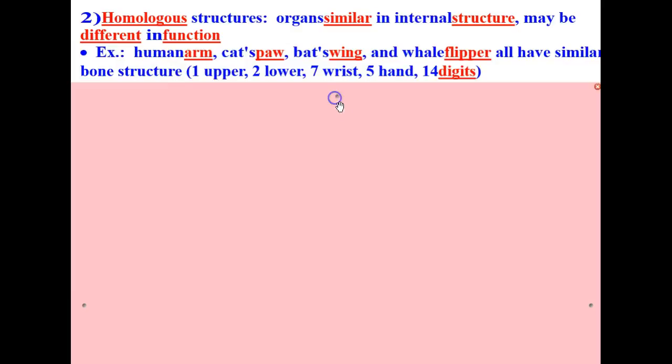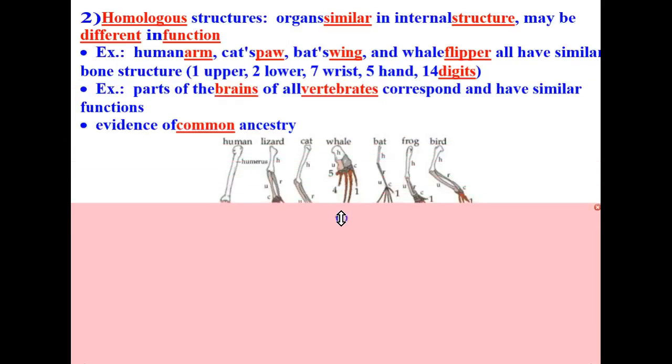For example, the human arm, cat's paw, the bat's wing and the whale flipper all have similar bone structure. They have one upper, two lower, seven wrist, five hand, and 14 digit bones, as shown in these pictures here.